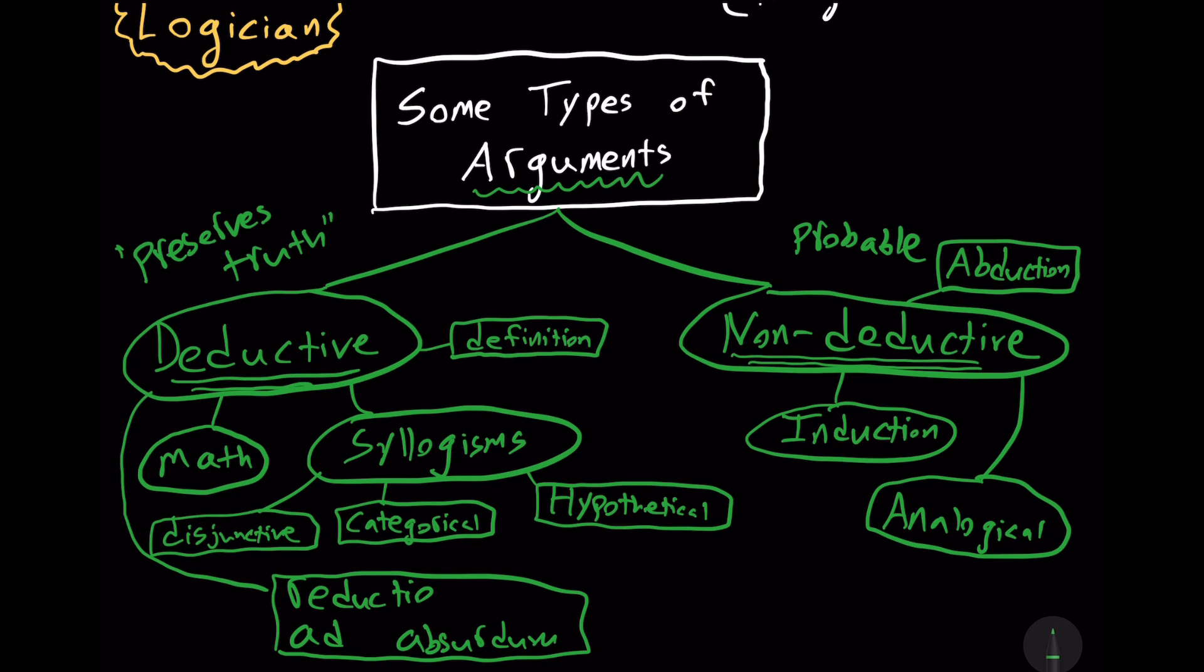Another very important type of non-deductive argument concerns authority. In fact, most of our knowledge comes from authority. How do you know where you were born? How do you know when you were born? How do you know various facts about history or geography? How does the scientist possibly know about all the various scientific theories out there? Has he verified every single theory out there himself in the laboratory? I don't think so. So authority is a very powerful and important type of non-deductive argument.